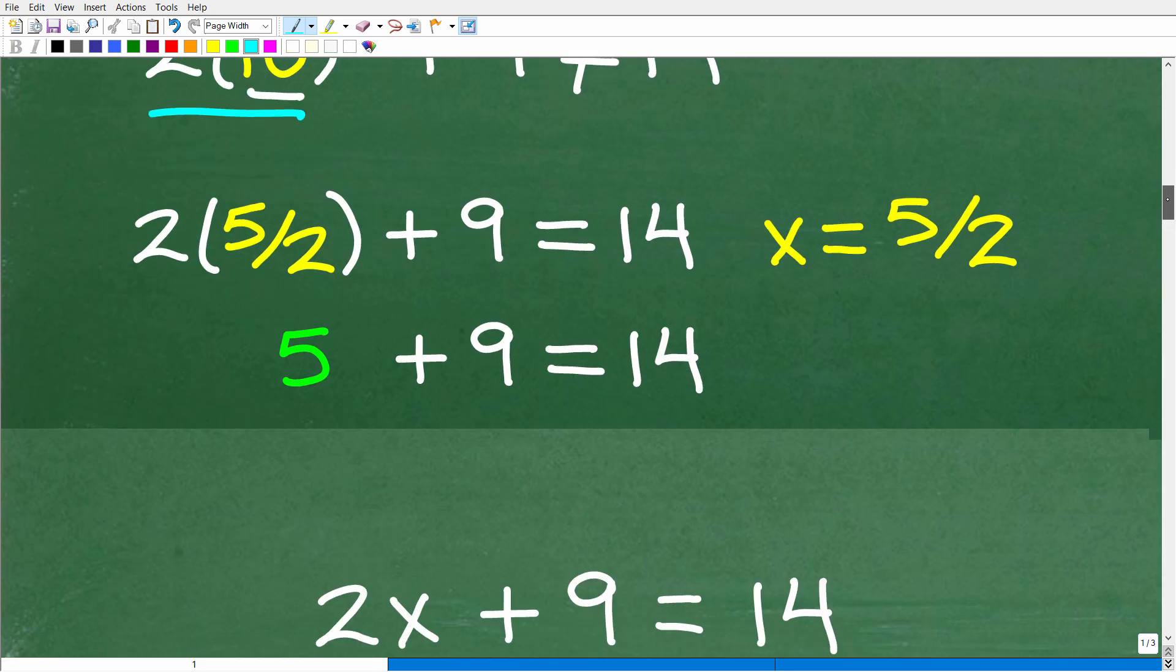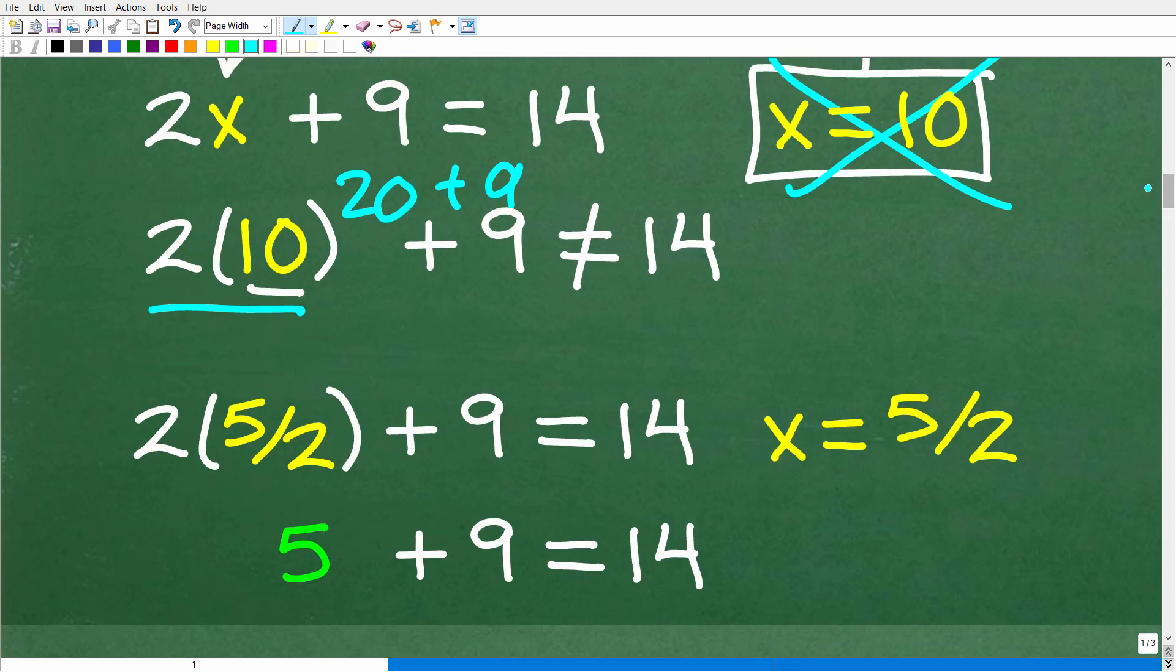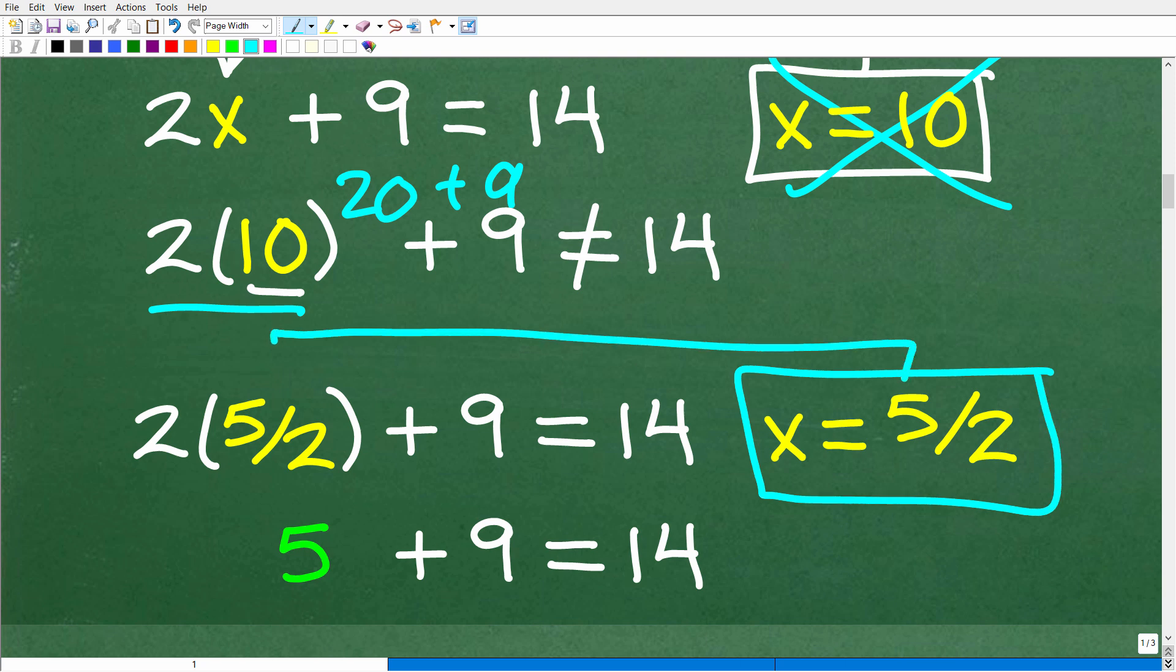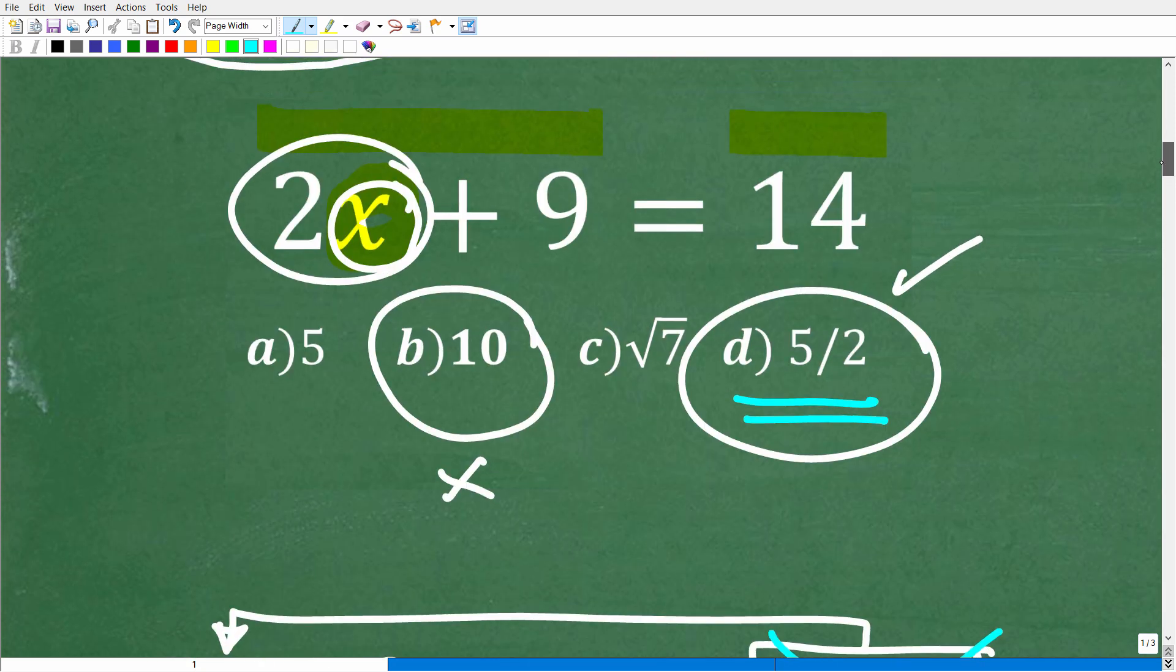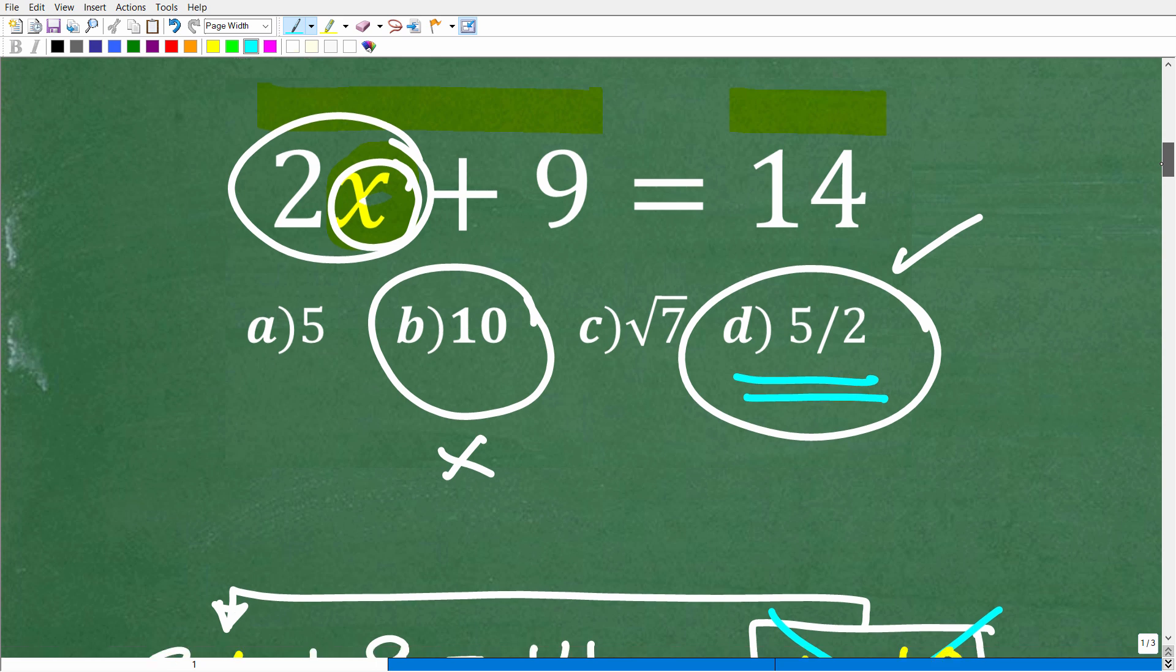Alright, so let's take a look at the correct answer here, which, of course, is 5 halves. And let's see why this is right. Alright, so we're going to replace this x with 5 halves. And we have 2 times 5 halves. The 2's cross-cancel, so we're left with 5. 5 plus 9, indeed, is 14. And 14 is equal to 14, so the equation is balanced. Alright, so this is the solution. And any time you have a multiple-choice question and you have an equation, well, no one should get these problems wrong because you can always check the solutions, even if you don't know the algebra.